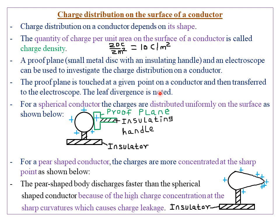The leaf divergence is noted. For a spherical conductor, the charges are distributed uniformly on the surface. A spherical conductor means the conductor is circular in shape. The only difference between a circle and a sphere is that a circle is in two dimensions, while a sphere is in three dimensions.